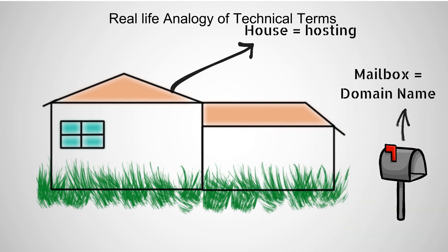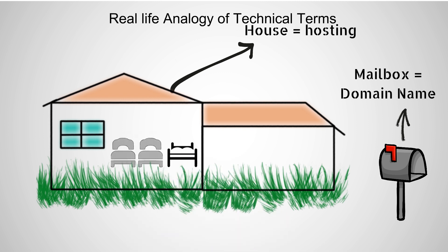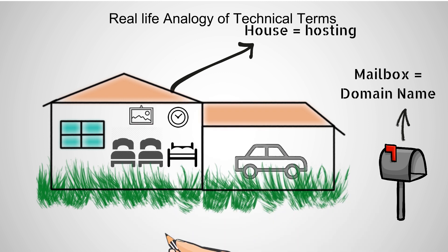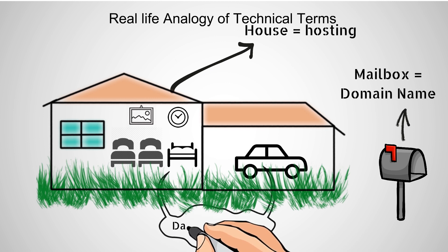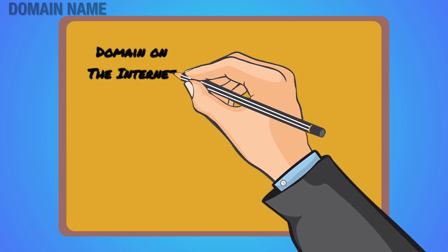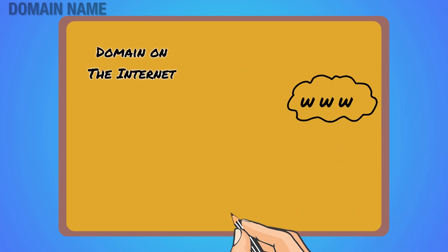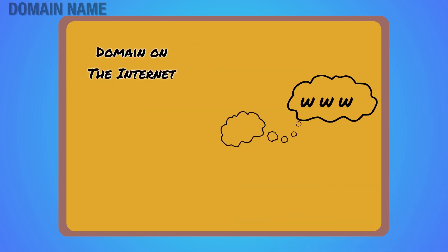Anything inside the house is your data, like web pages, videos, photos, and audio files. We have learned about local network domain; now let's talk about domain on the internet.